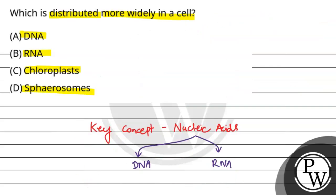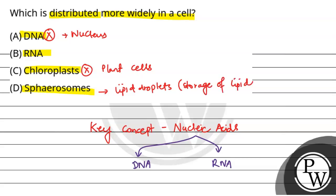So coming back to the question, which is the most widely distributed? DNA is not because DNA is only in nucleus. Chloroplasts are present in plant cells, and spherosomes are basically lipid droplets that help in the storage of lipids. So the final answer for this question is option B, RNA.